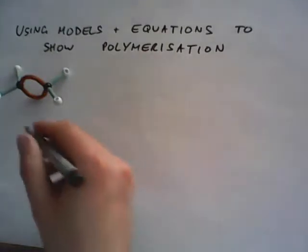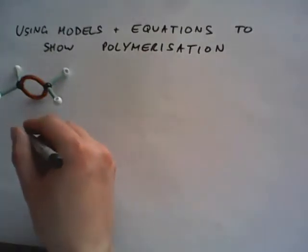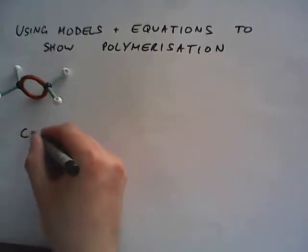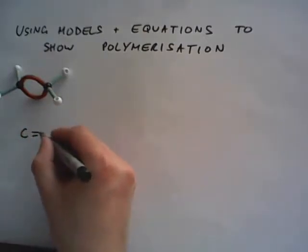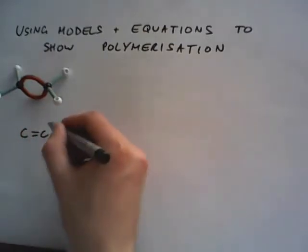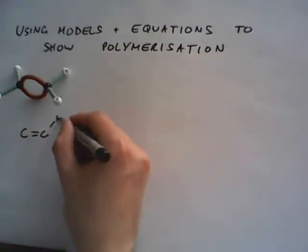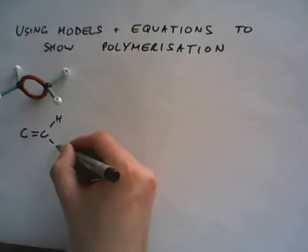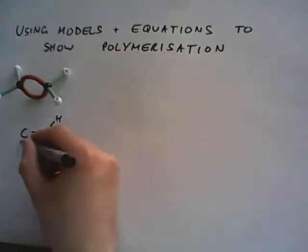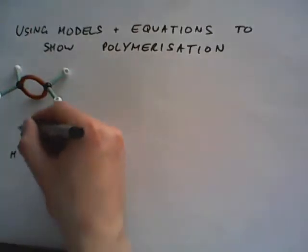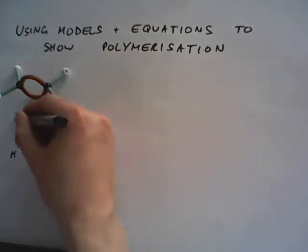And as a structural formula, it would look like this: C, double bond, C, with H, H, H, H around the outside.